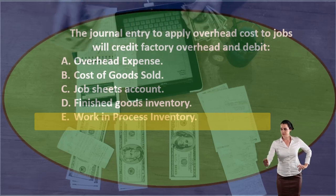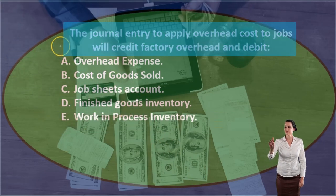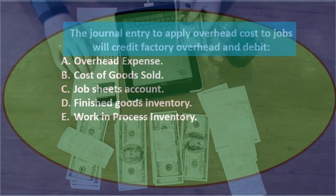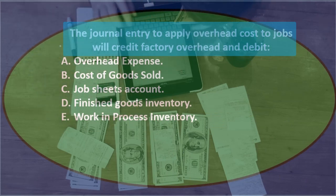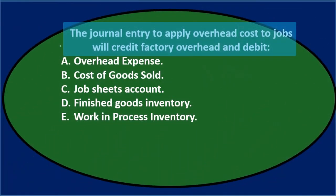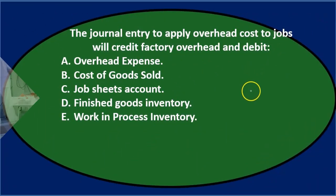Let's go through this using the process of elimination. The journal entry to apply overhead costs to jobs will credit factory overhead and debit — this is one of those questions asking for a journal entry. We don't know exactly what that journal entry number is, but we can write out the journal entry in journal entry form. They actually give us half of it: we're taking it out of factory overhead.